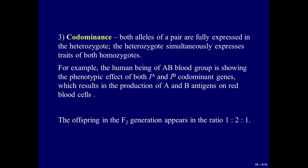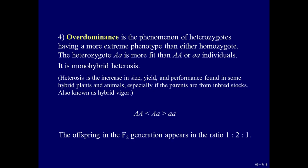The third type is co-dominance, where both alleles of a pair are fully expressed in the heterozygote. The heterozygote simultaneously expresses traits of both homozygotes. For example, a human of AB blood group shows the phenotypic effect of both IA and IB codominant genes, which results in the production of both A and B antigens on red blood cells. The offspring in the F2 generation appear in the ratio 1 to 2 to 1.